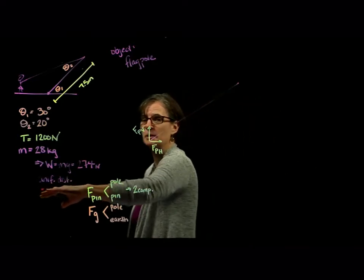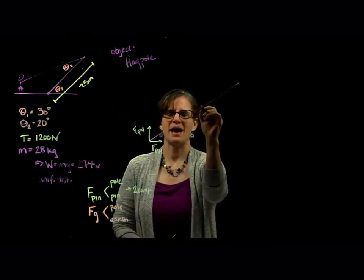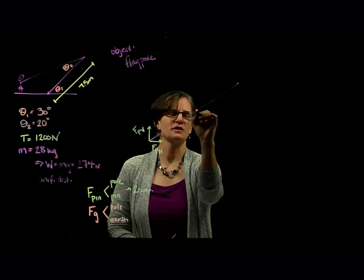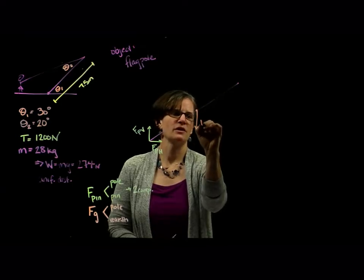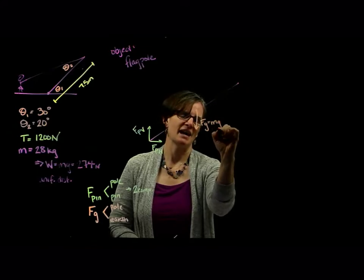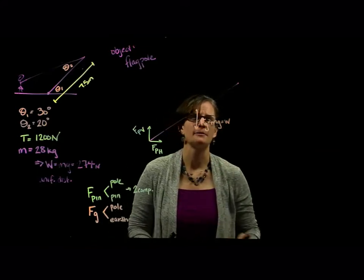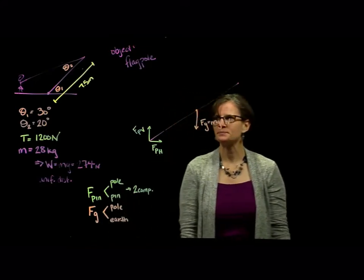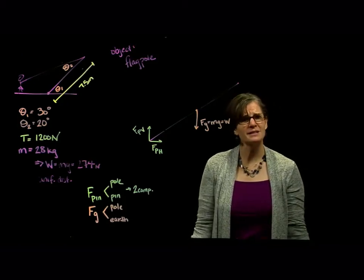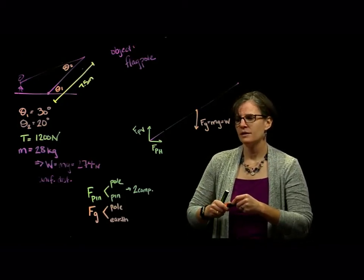And so, this is a uniformly distributed pole. The center of mass is at the geometric center, and that then is where the force of gravity is acting. And just keeping in mind that that's the weight. What else is interacting with this pole?